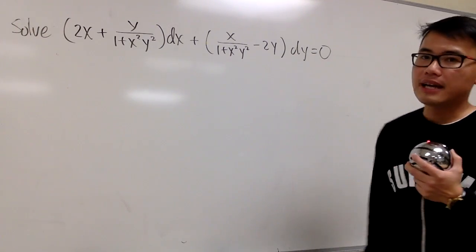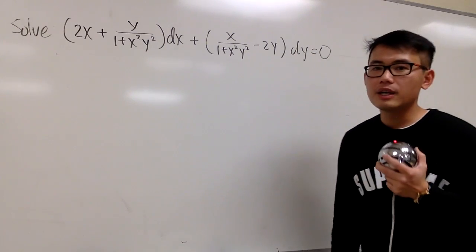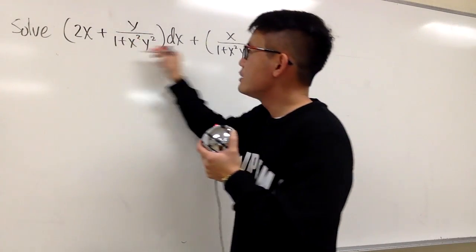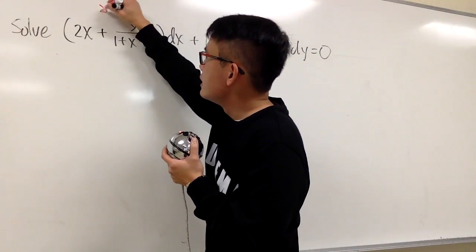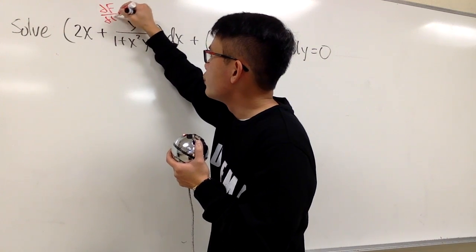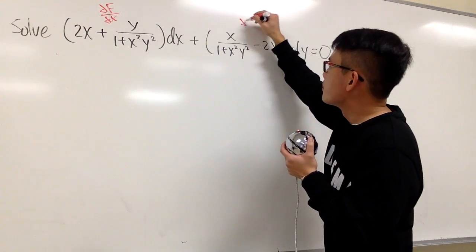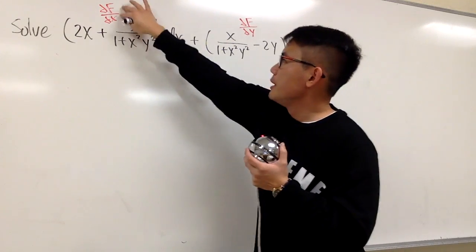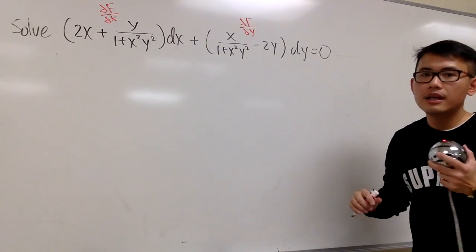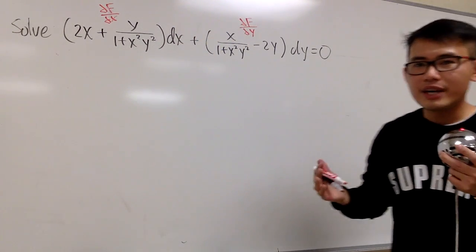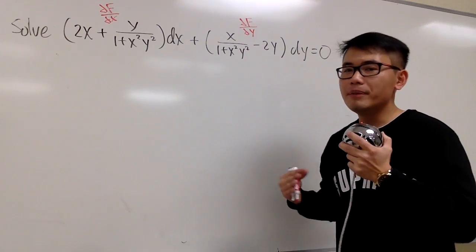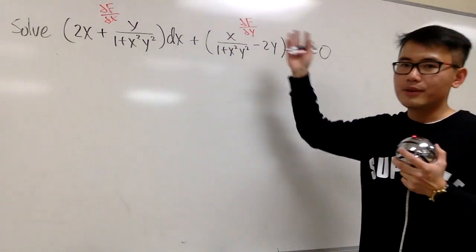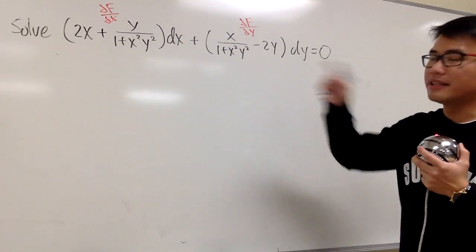Suppose this is indeed exact. That means there is a function — we call it capital F — so that the first expression represents the partial of F with respect to x, and the second represents the partial of F with respect to y. Make sure you match like this. We have to check the mixed partials. If the mixed partials are the same, that means capital F exists and the equation is exact.